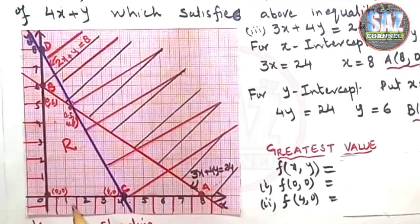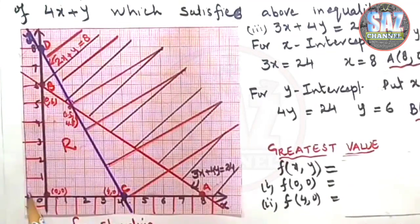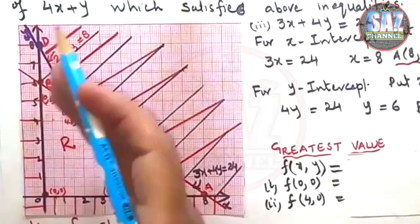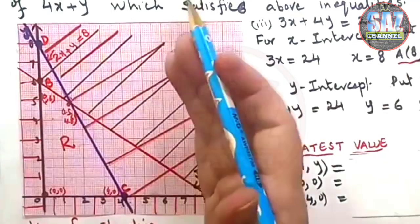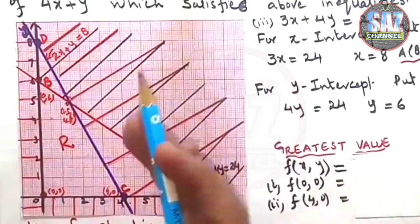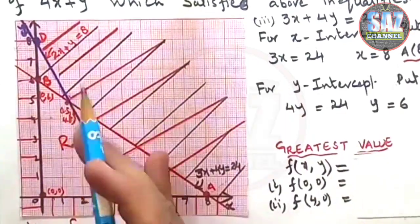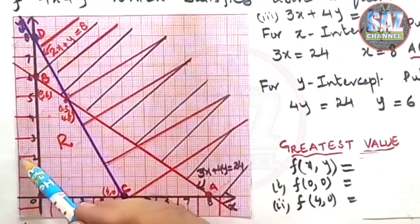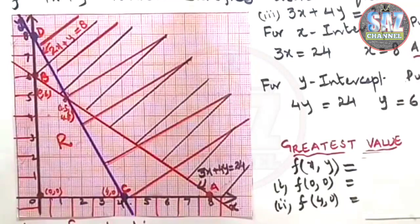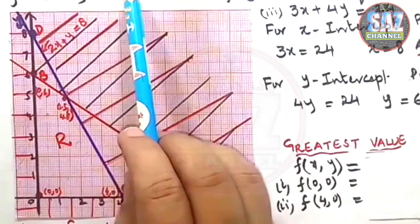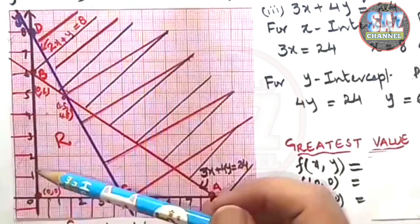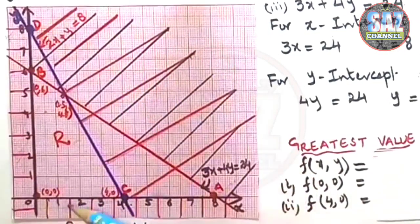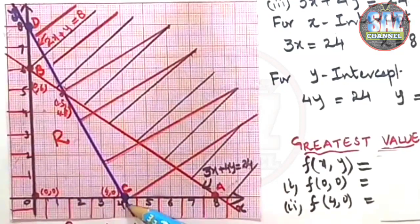For x ≥ 0 means we need positive values of x and we know x values are positive in the first quadrant or towards right of y-axis. So for this situation, I am not going to shade right side of y-axis. My shading will be towards left of y-axis. Coming to the second condition, y ≥ 0 means I need the positive values of y. So for this purpose, I will be shading below x-axis.